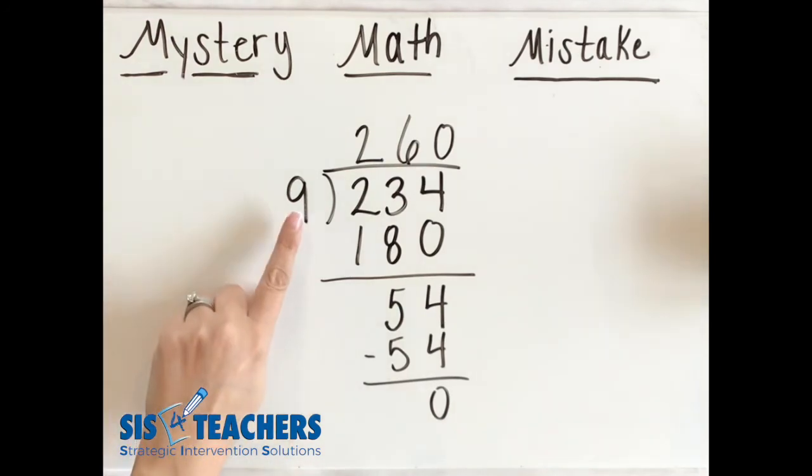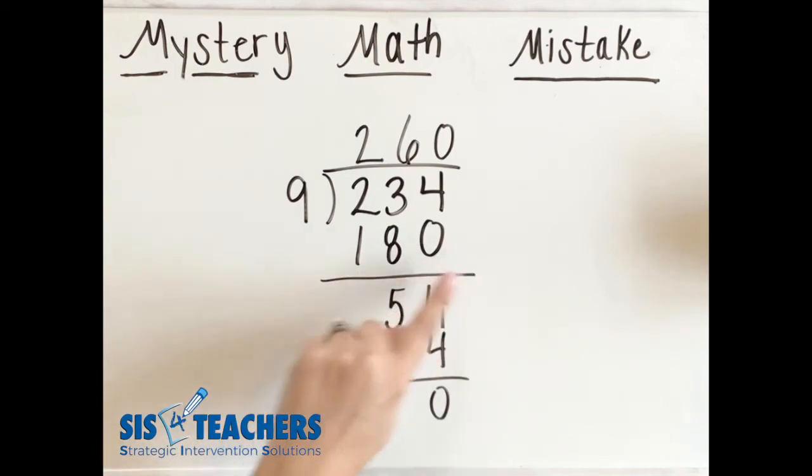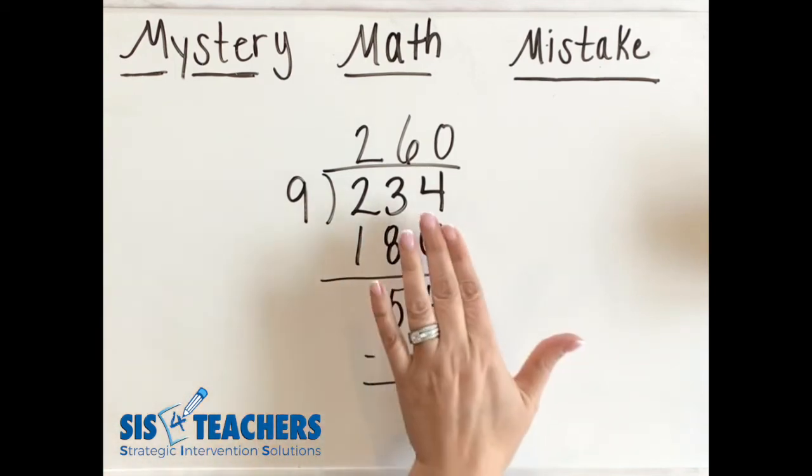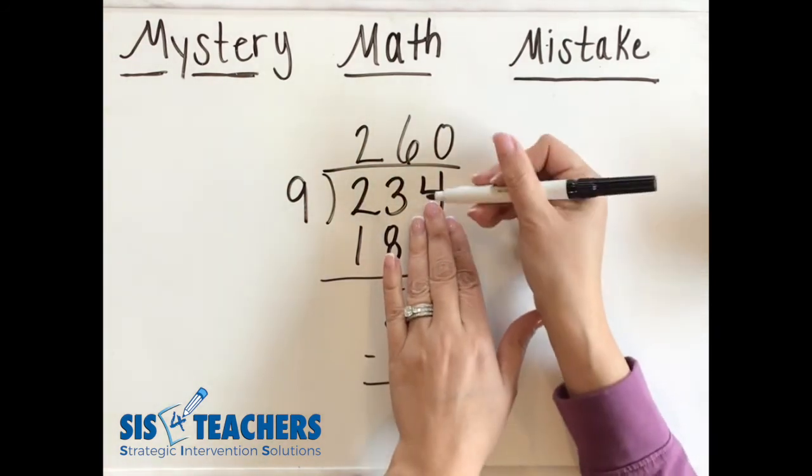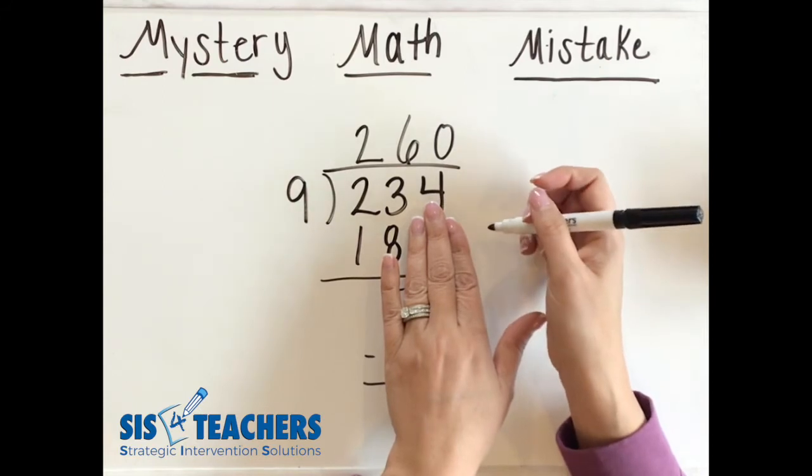So I know that my answer is 260. I showed that the 9 went in 2 times. 2 times 9 is 180 right. So just kind of put the value in there. Some of you like to do a shortcut and just do the 18 and then bring down the 4. You could do that also. I like to show my totals in here.